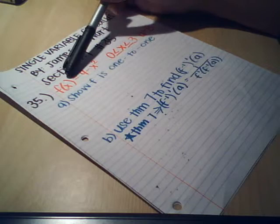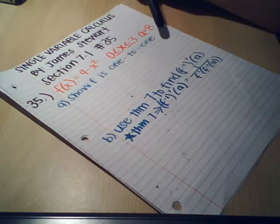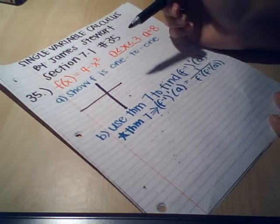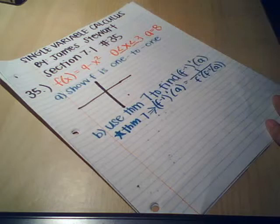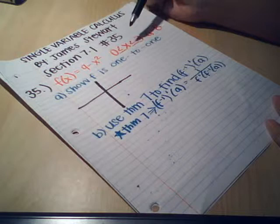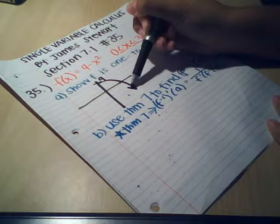So part A says show f is 1 to 1. We show f is 1 to 1 by taking the graph of the function 9 minus x squared, and we're only going to focus on the positive side of the x-axis, because x is greater than or equal to 0, and x is less than or equal to 3.